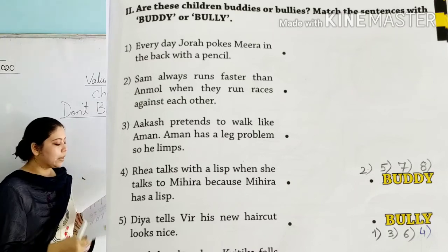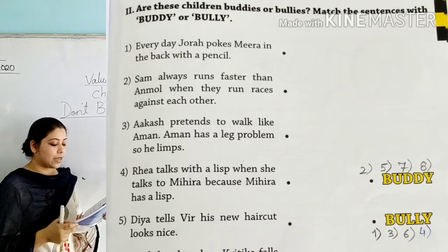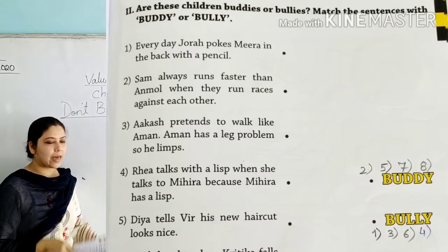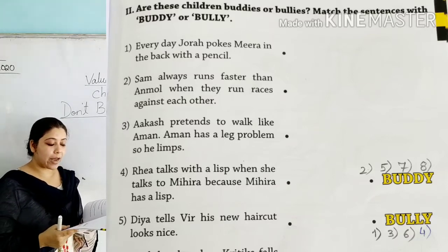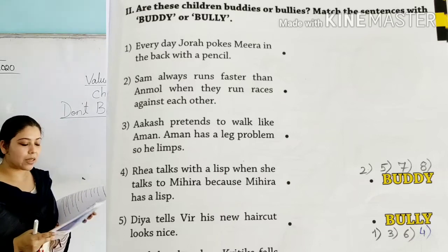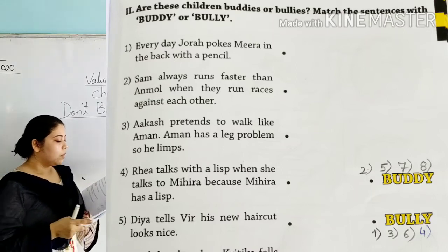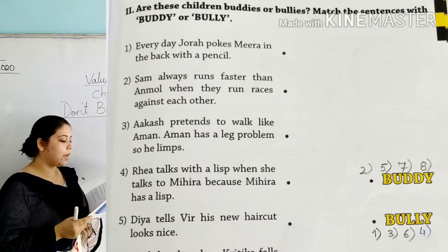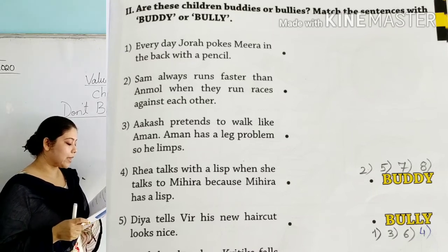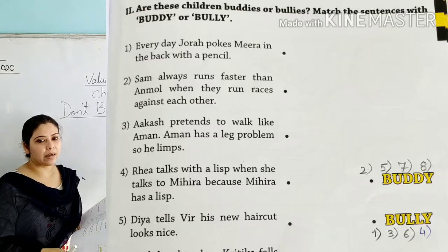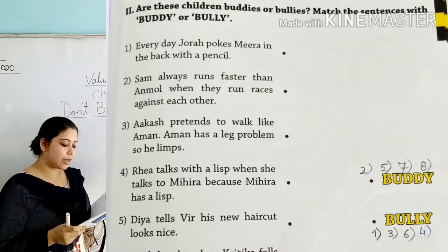Third one: 'Akash tries to walk like Amman, who has a leg problem and limps.' If somebody has a problem with his leg and cannot walk properly, and you try to imitate him — make fun of that person and pretend to walk like him — that is bullying. This goes under bully. Fourth: 'Rhea talks with a lisp when she talks to Mihira because Mihira has a lisp' — this is a bully. Someone having a problem with speech is called a lisp, and imitating it is bullying.